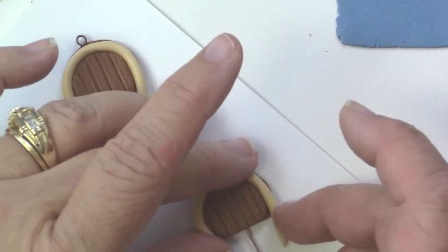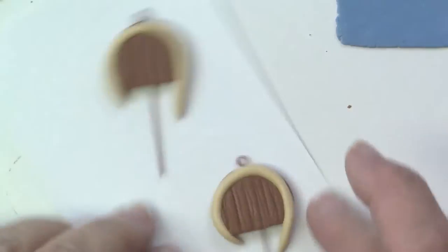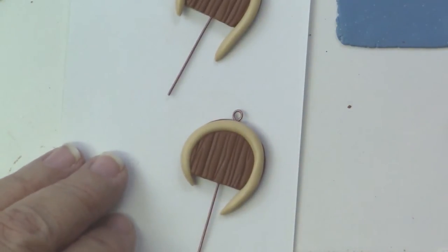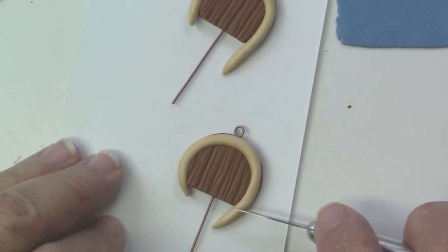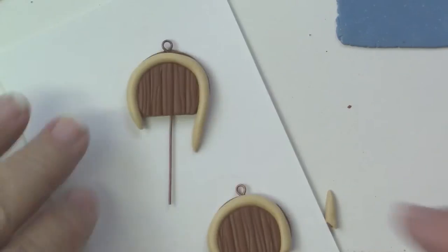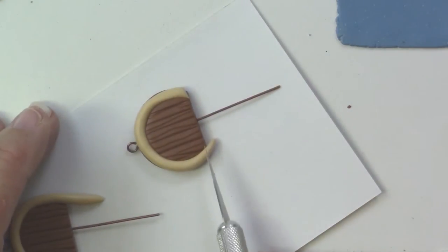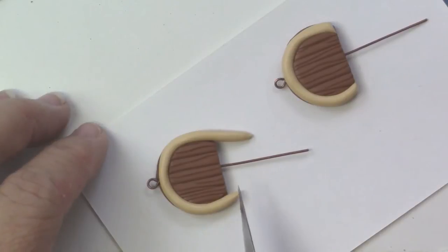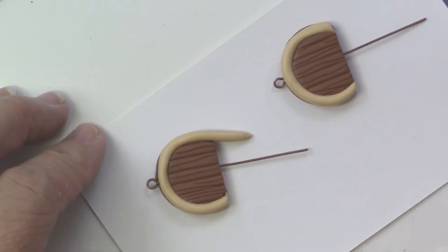I'll go ahead and place that around the frame of the door. I'll do that on each one of these little earrings. And then I'll take my craft knife and cut off any excess.